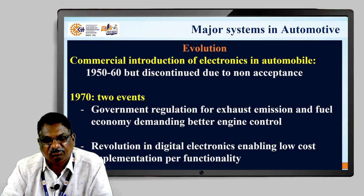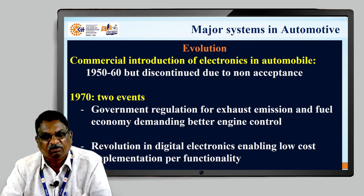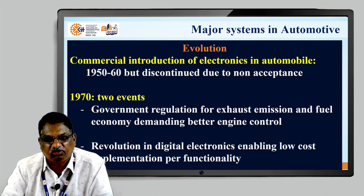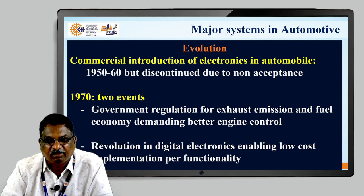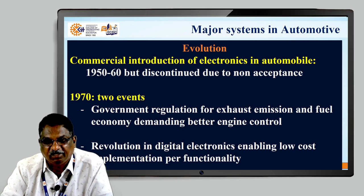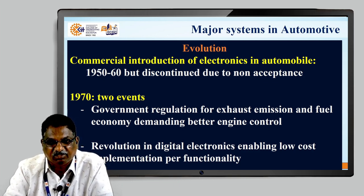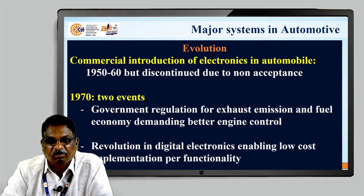In 1970, two events occurred. First, government regulation for exhaust emission and fuel economy demanded better engine control. Second, revolution in digital electronics enabling low-cost implementation per functionality. Due to these two things, the entry of electronics in the automotive was accepted.